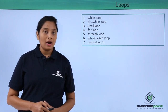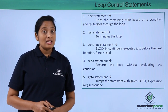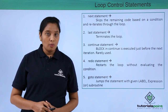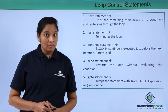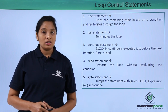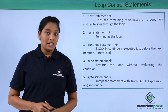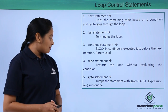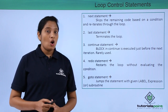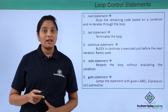Now let us see the loop control statements. There are 5 loop control statements. Next statement skips the remaining code depending on the condition. Last statement terminates the loop depending on the condition. Continue statement is executed right before the next iteration and will not have any effect on the control flow. Redo statement restarts the loop without evaluating the condition. Finally, goto statement will go to a label, expression, or a subroutine — you write goto followed by the label name, expression name, or subroutine name.